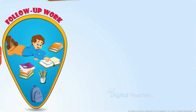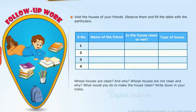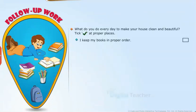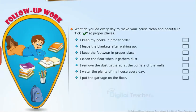Follow-up work: Visit the houses of your friends, observe them, and fill the table with the particulars — whose houses are clean and why, whose houses are not clean and why, and what would you do to make the house clean. Write down in your notes. Collect images of different houses, paste them on a chart, and present it in your class. What do you do every day to make your house clean and beautiful? Tick at proper places.